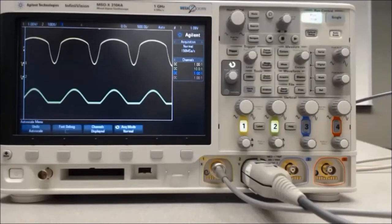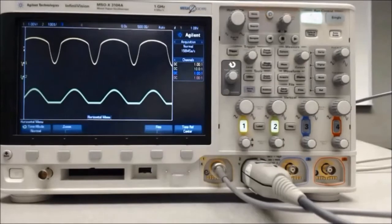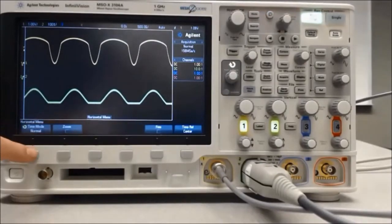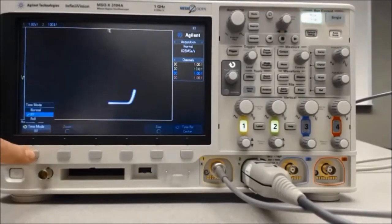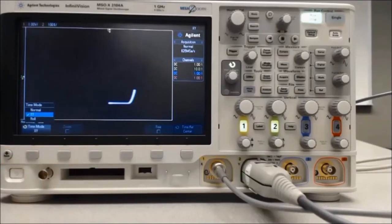To set these up as an X-Y graph, we want to press the horizontal on the time scale, and then go down to time mode, and change it to X-Y. From here, we can get the X-Y plot of the current versus voltage.